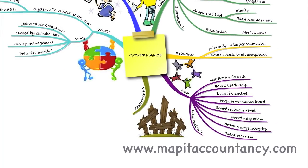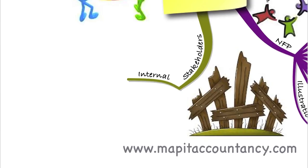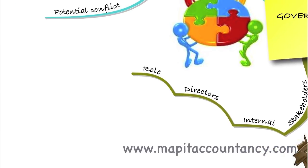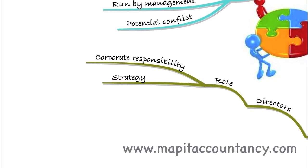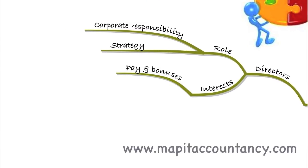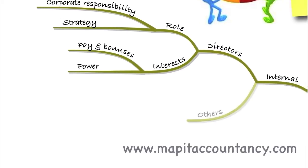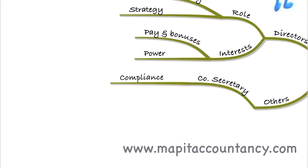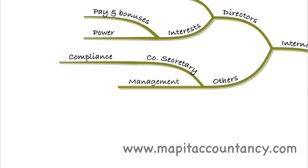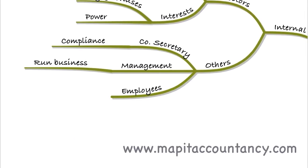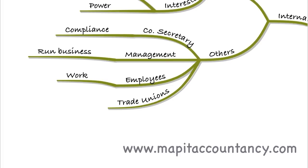The last thing we introduced in this session was stakeholders. We'll be looking at stakeholders in detail later on, but we're thinking here about who the main stakeholders within the business are — people who have a legitimate interest in the business. Internal stakeholders include directors, whose role is corporate responsibility and setting strategy, and who are interested in pay, bonuses, and power. Others include the company secretary, who is in charge of compliance with company house rules; management, who run the business day-to-day; employees, who work for the business; and trade unions, who help employees and maintain employee rights.